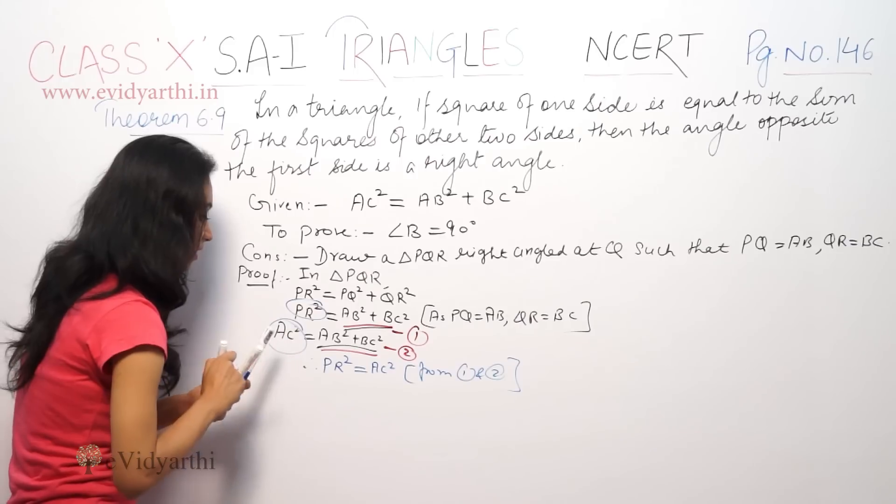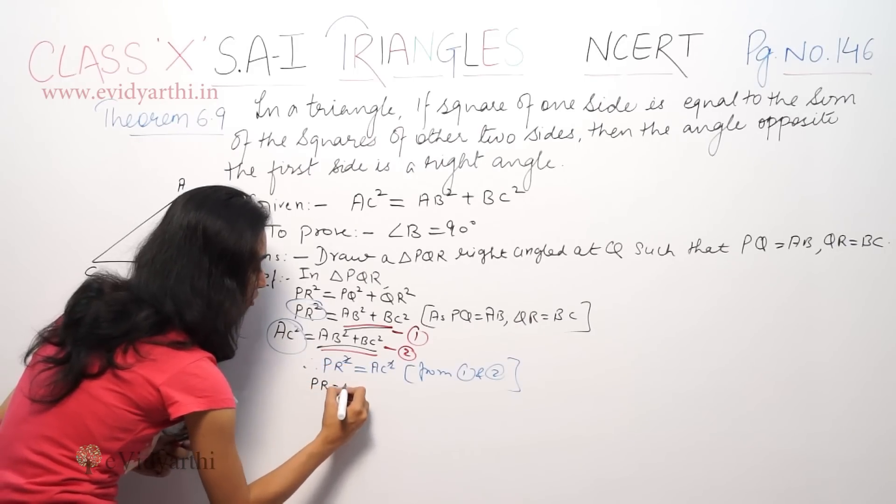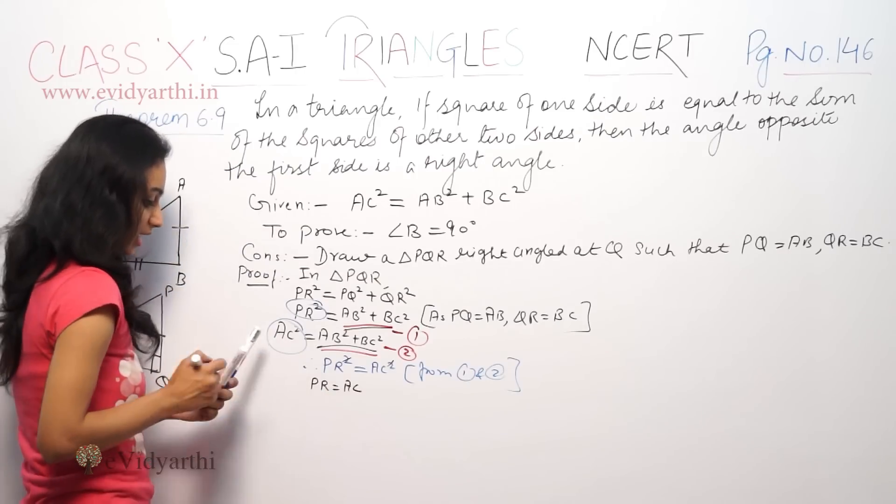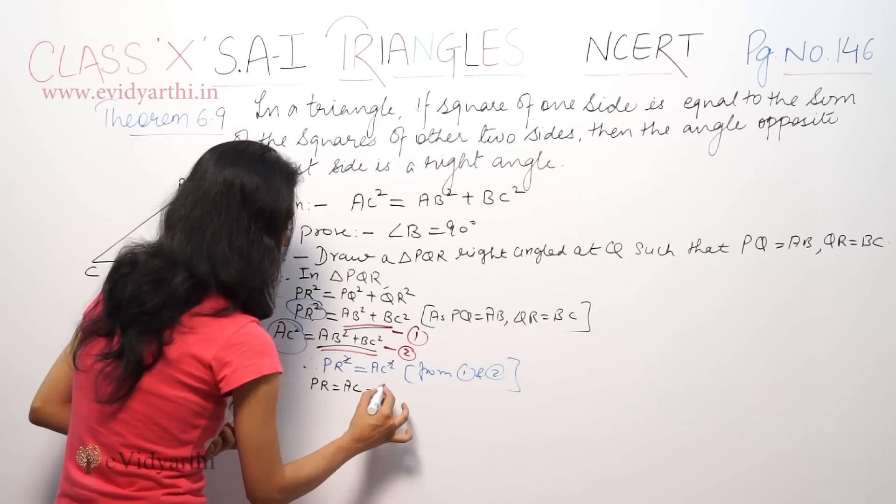So, PR is equal to AC. This is equation number 3.